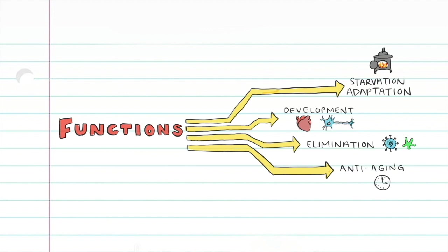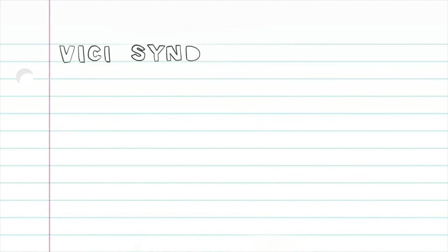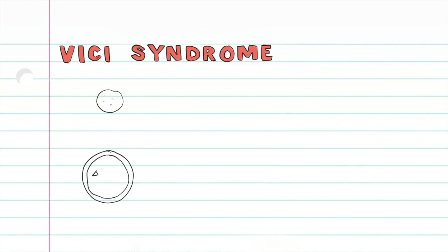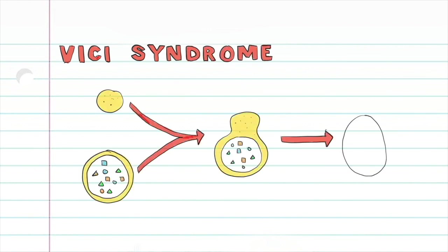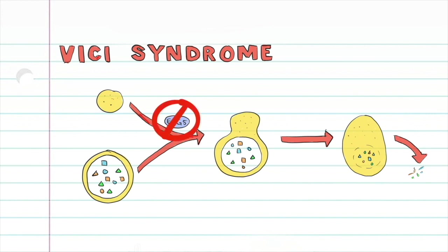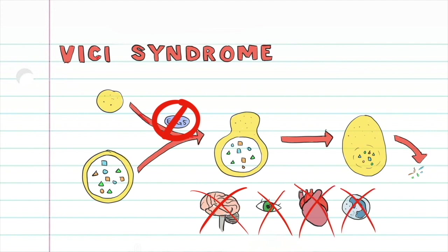As you can see, autophagy plays many important roles in the body, and the disruption of autophagy can lead to many harmful disorders. One example of an autophagic disorder is VG syndrome. In your cells, there's a protein called EPG5 which is involved in the fusion of the lysosome and phagophore. People with VG syndrome possess a mutation in this gene which interferes with the interaction between the two organelles. This can cause a host of problems affecting the brain, eyes, heart, and immune system.